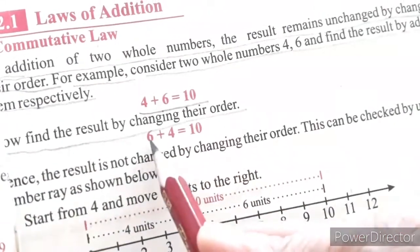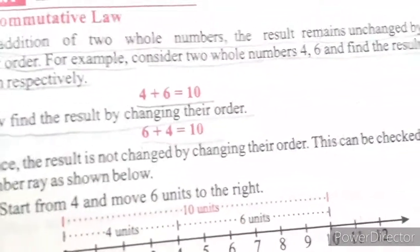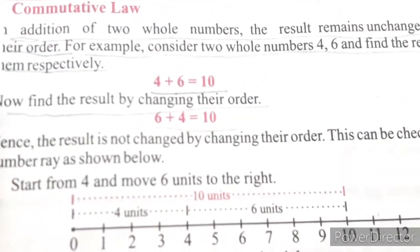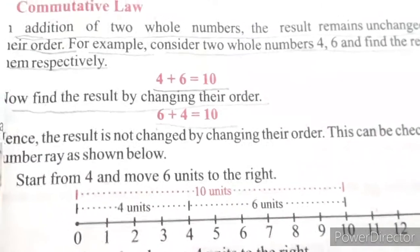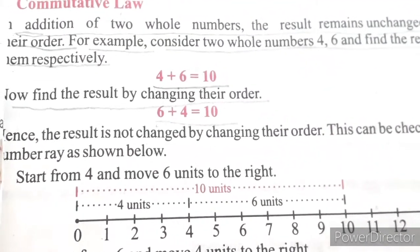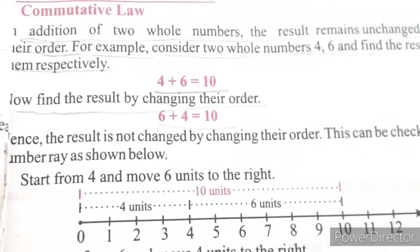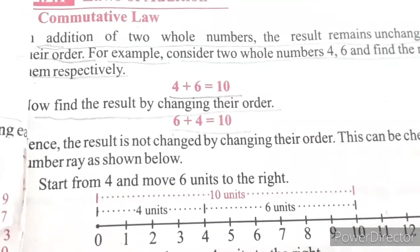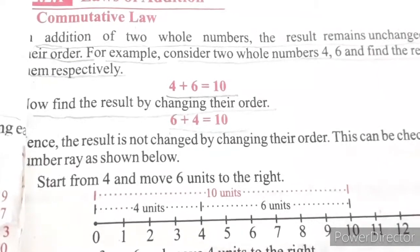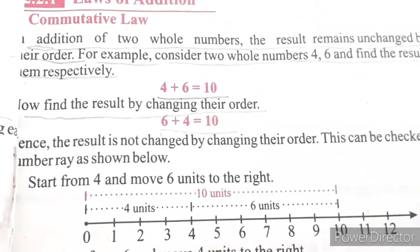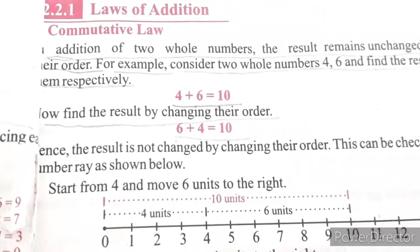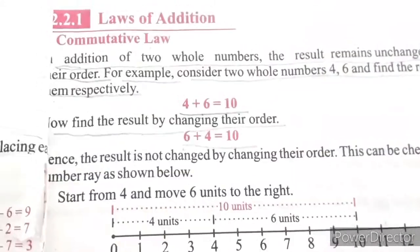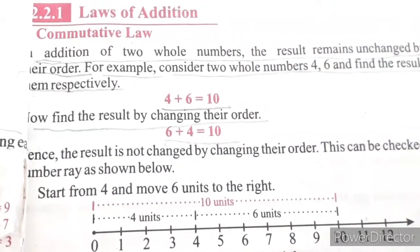Now find the result by changing their order. 6 plus 4 is equal to 10. For the addition of two whole numbers — whole numbers are 0, 1, 2, 3, 4 — if you add them, by changing their order the result will be the same. This is called commutative law.